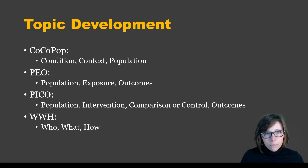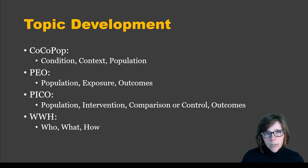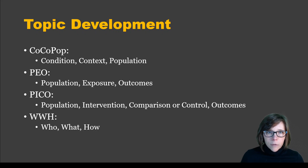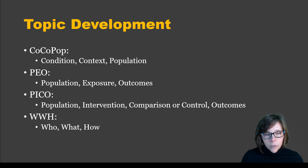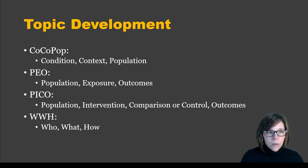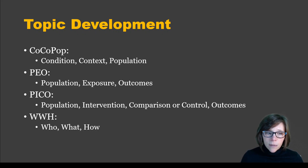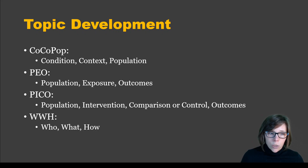We're going to talk quickly about topic development. These are frameworks for coming up with an answerable, feasible, viable research question, because it's going to inform the way that you search later on. Outlining the most important components of your research topic will help you make an effective search. COCO POP: identify your condition, context, population. PO: population, exposure, outcomes. PICO, used a lot in clinical settings: population, intervention, comparison or control, outcomes. And WWH: who, what, how.